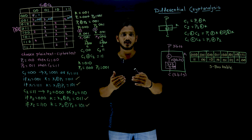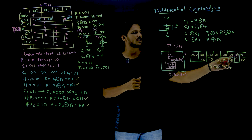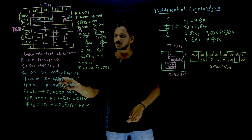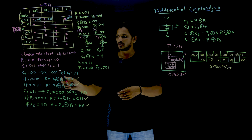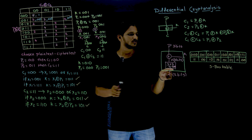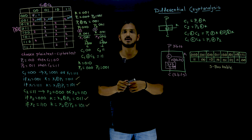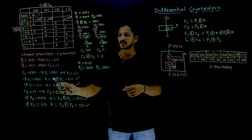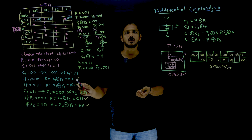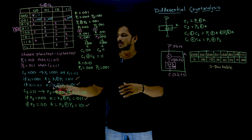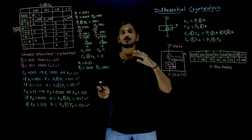X is the input to the S-box. So if the output is 00, the X values are 001 or 111. If X1 = 001, then K = X1 XOR P1 = 001 XOR 010 = 011. If X1 = 111, then K = X1 XOR P1 = 111 XOR 010 = 101. So these are the two key possibilities from the first plain text-cipher text pair.